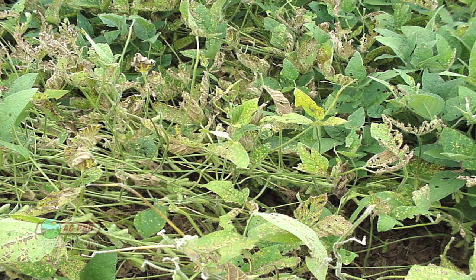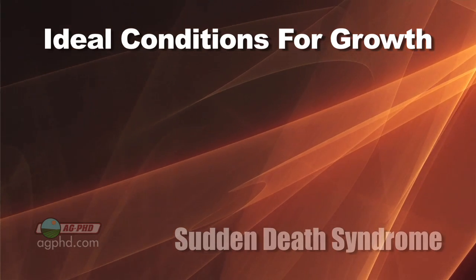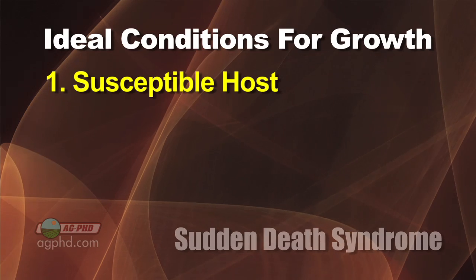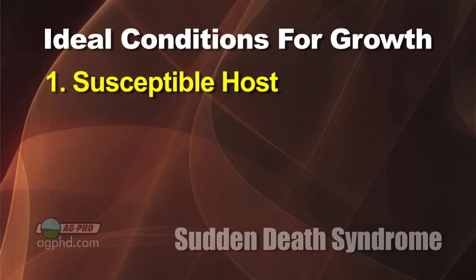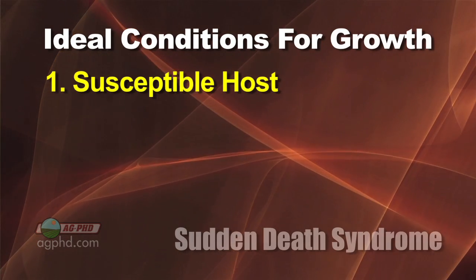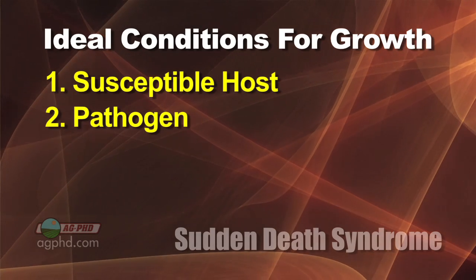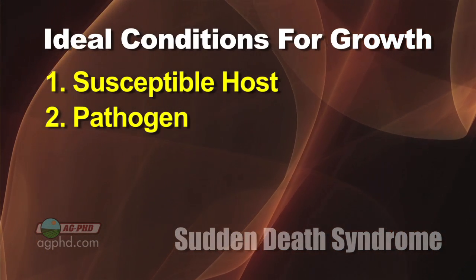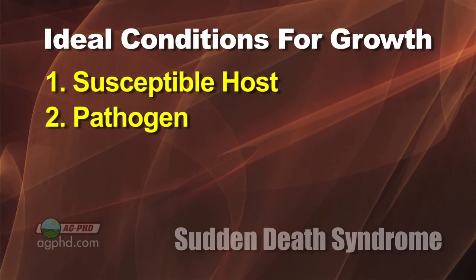Especially through Iowa and into Illinois. For any disease to get going, it needs the three parts of the disease triangle to really take over. First of all, you must have a susceptible host, and many of the popular soybean varieties planted through those maturities in the group twos and group threes were pretty susceptible to sudden death syndrome. Then you also have to have the pathogen — some inoculum for the disease to be out in the field. And it's a fungus — specifically a Fusarium fungus.